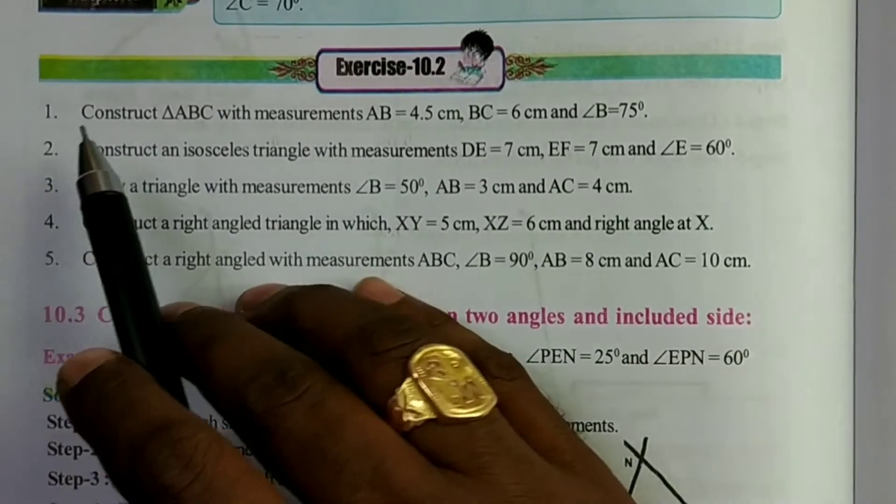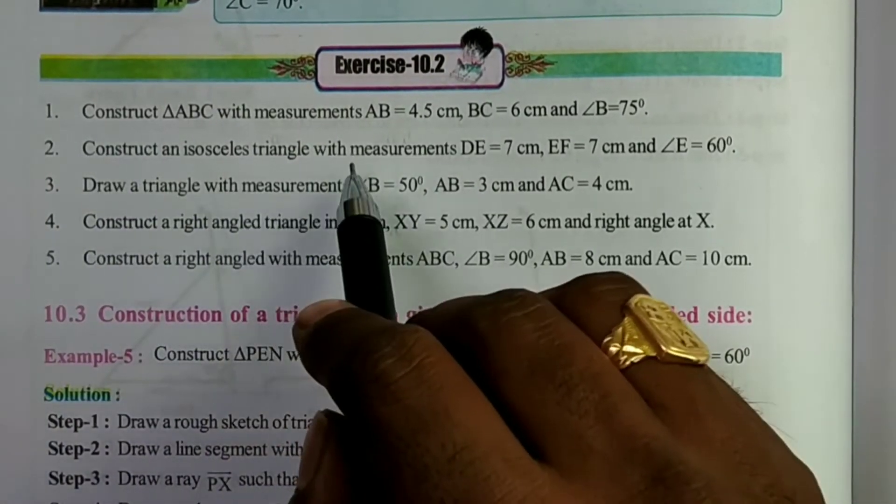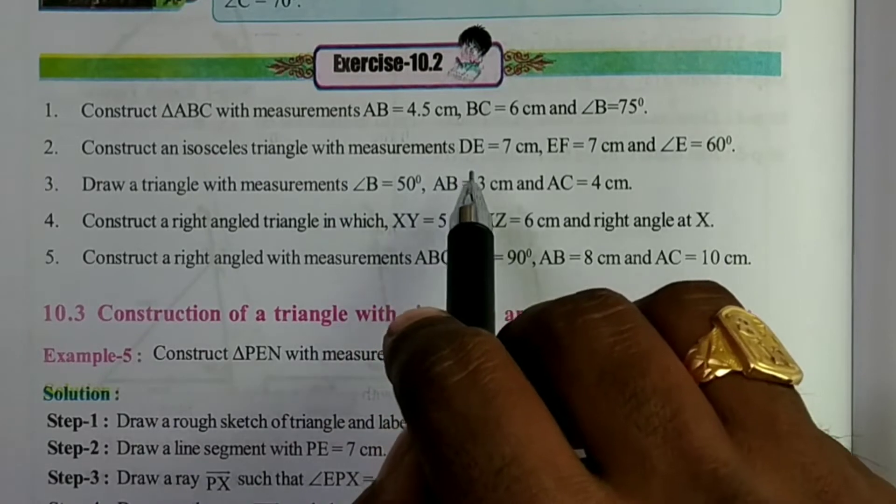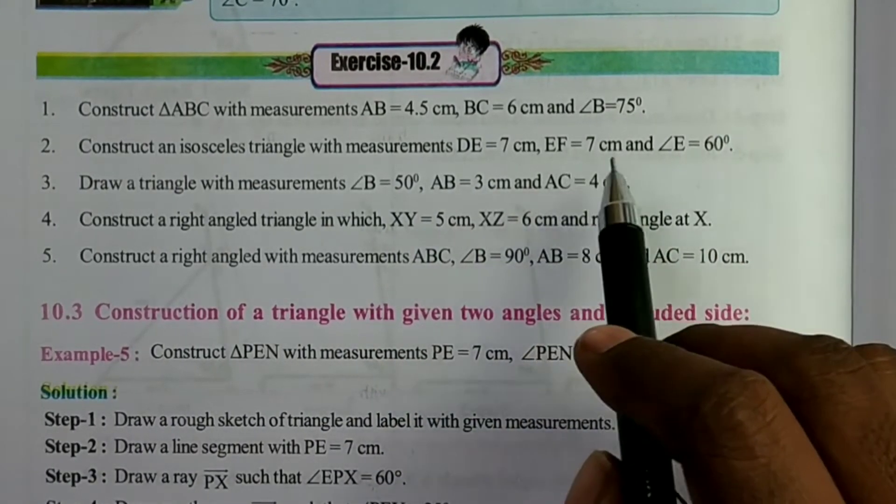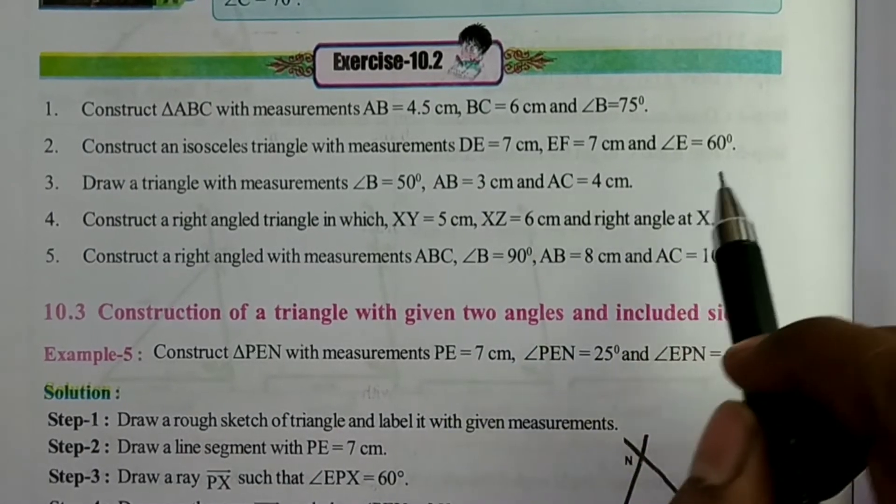The construction is: construct an isosceles triangle with measurements DE equals 7 cm, EF equals 7 cm, and angle E equals 60 degrees.